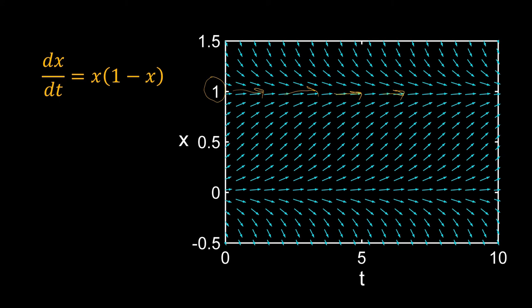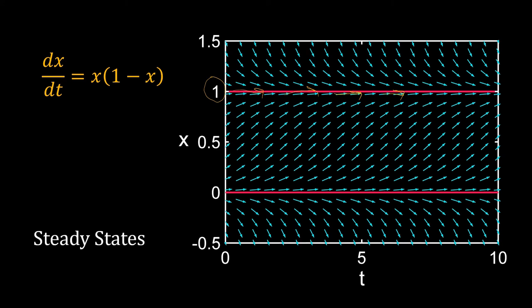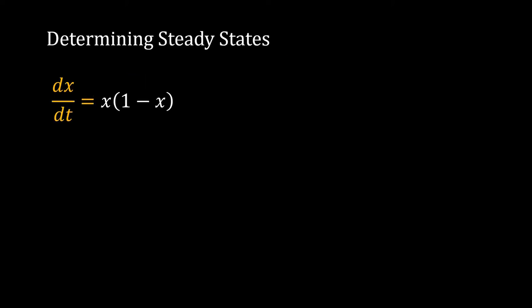Our ODE has another steady state at x = 0. You can identify steady states algebraically: for a given ODE, set the derivative equal to 0, so the right-hand side function is also equal to 0.